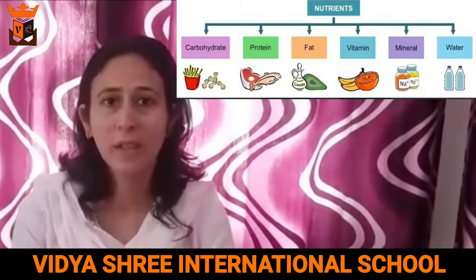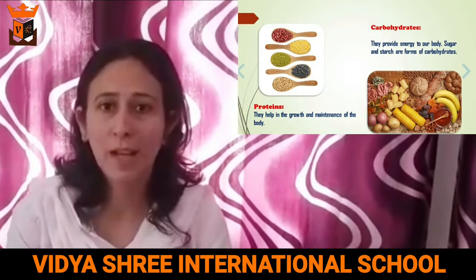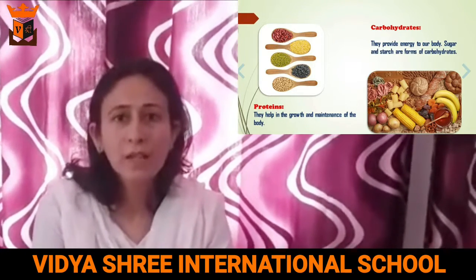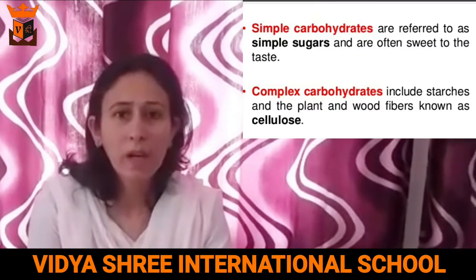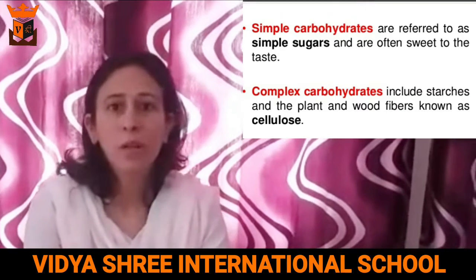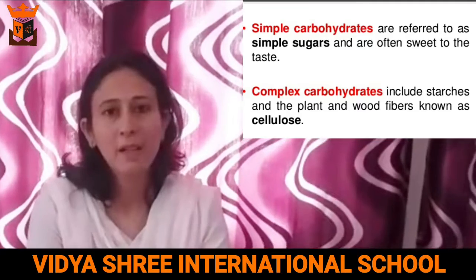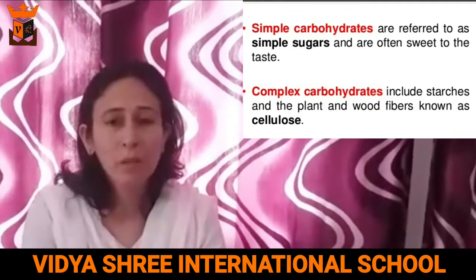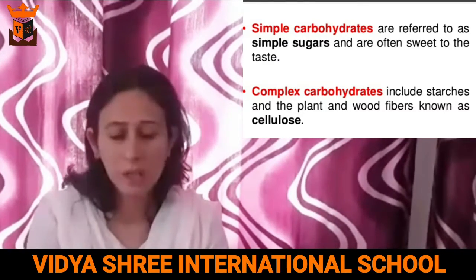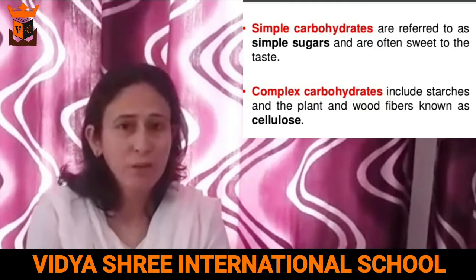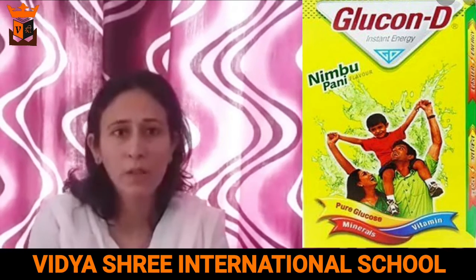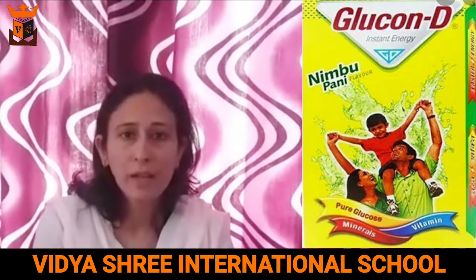The first nutrient is carbohydrates. Carbohydrates are the energy giving foods — they give energy to our body. There are two types of carbohydrates: starch and sugars. Sugars are the simple carbohydrates — they do not take much time to absorb in our body, so they get quickly absorbed and provide instant energy. Whereas starch is complex because it takes much more time to break down and provide energy. For example, on a hot summer day if you feel weak, you get instant energy by drinking Glucon-D in water, because it is a simple sugar.